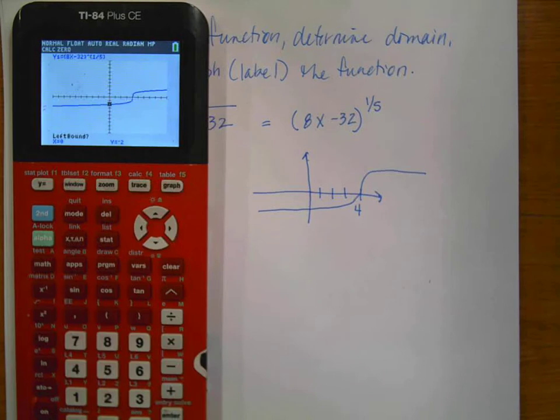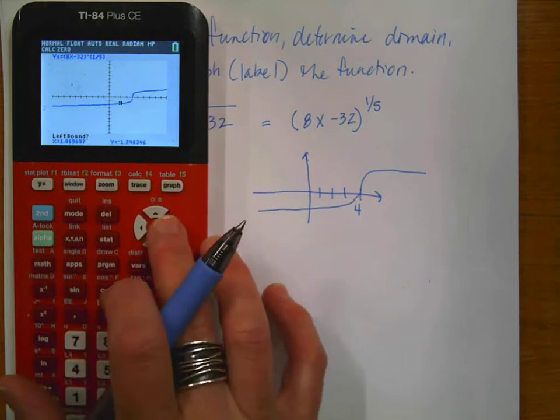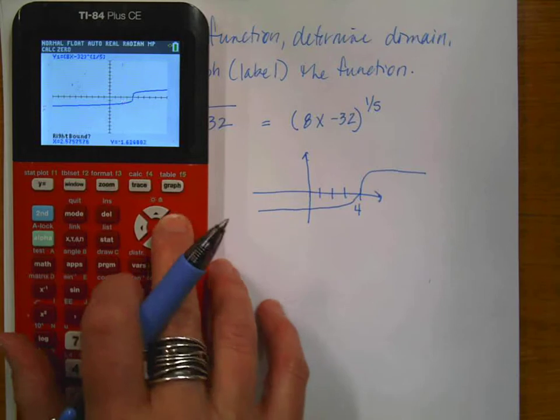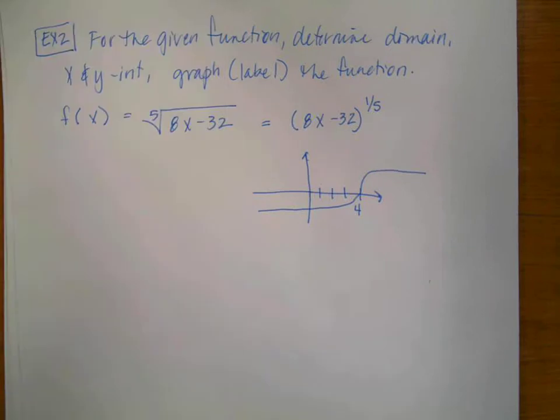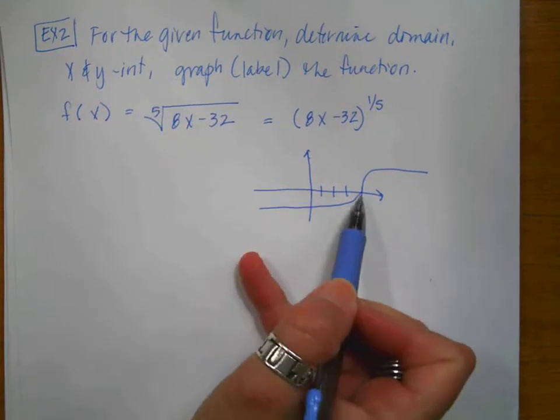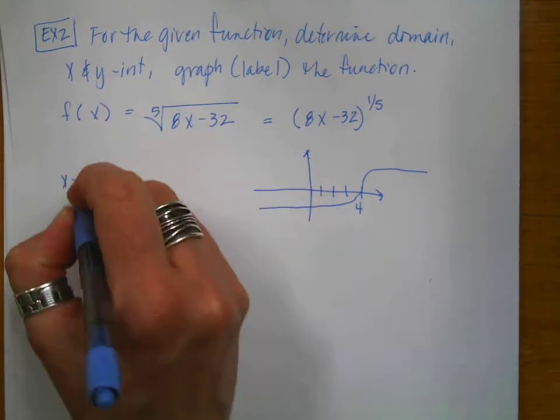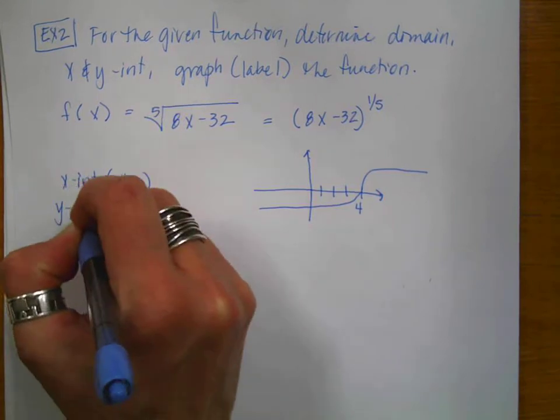But instead of assuming, I'm actually going to find that. So second, calculate. We're looking for a 0 or an x intercept. Then make it close on the left. And then I'm going to get close on the right. Enter, enter. And it tells me that it is indeed 4. So the first thing that they ask us to do was find my x intercept. So I'm going to write that my x intercept is 4, 0.